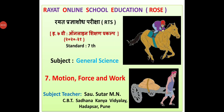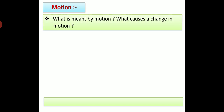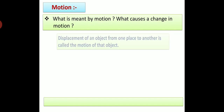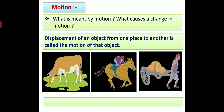Standard 7 General Science, Chapter 7: Motion, Force and Work. What is meant by motion? Observe these pictures. We can see a cow is grazing, a horse is running and a man is pulling a cart. All the things in these pictures are in motion. So, what is motion? Displacement of an object from one place to another is called the motion of that object.